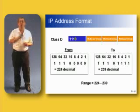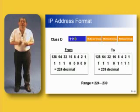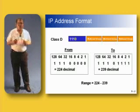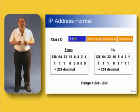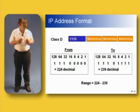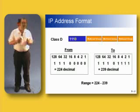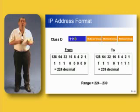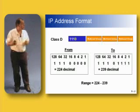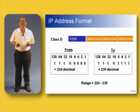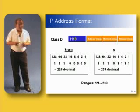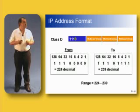Just one more — a class D address. The first three bits are set to one and the fourth bit is set to zero. That gives a possible range of one-one-one-zero followed by four zeros, all the way up to one-one-one-zero followed by four ones. Converting those into decimal, the possible ranges of class D multicast addresses are from 224 up to 239.